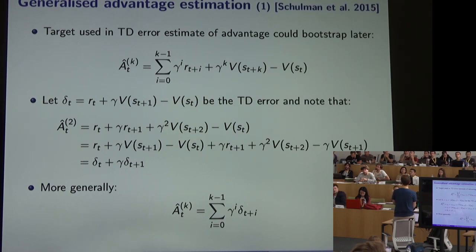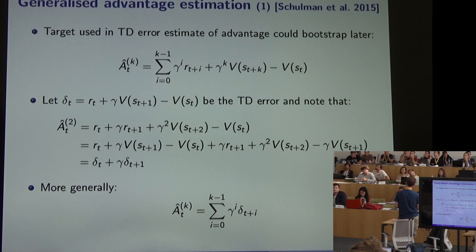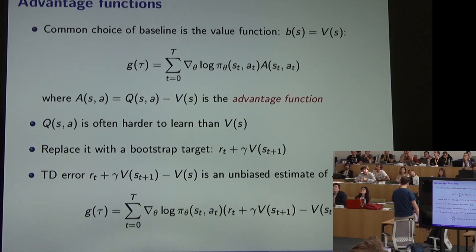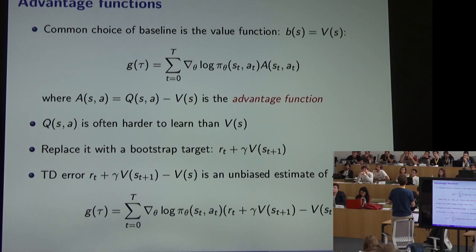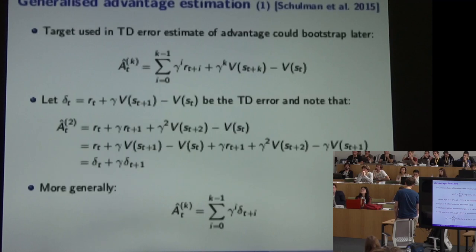By mixing n-step updates when estimating the critic, there's another way to balance bias and variance in policy gradient methods: using different n-step returns in the policy gradient itself. Instead of using just one sample reward before bootstrapping, we can move further in the direction of REINFORCE or stay closer to a traditional actor-critic, occupying any point between those two extremes.